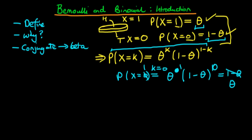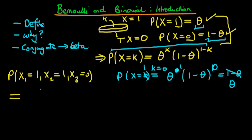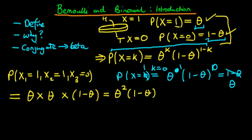Now consider what happens if we flip the coin three times. Imagine we want to find the probability that the first flip was 1, the second flip was 1, and the third flip was 0 — two heads followed by a tail. We assume the flips are a random sample and hence independent, so we multiply the individual probabilities together. For two heads we get theta times theta, and for the tail we get 1 minus theta, giving a probability of theta squared times 1 minus theta for this particular sequence.